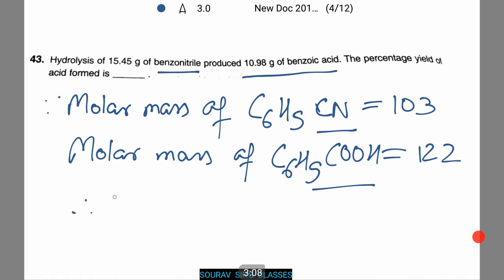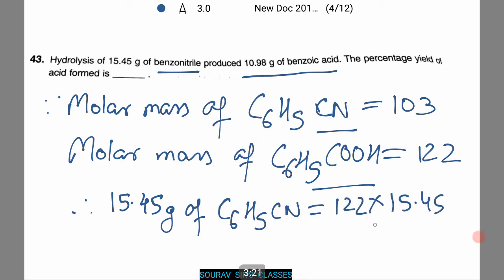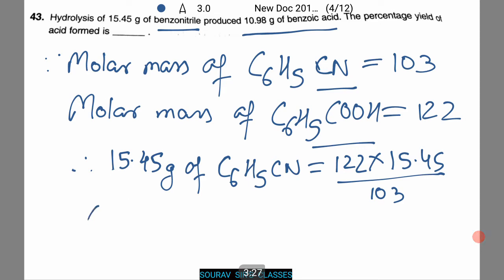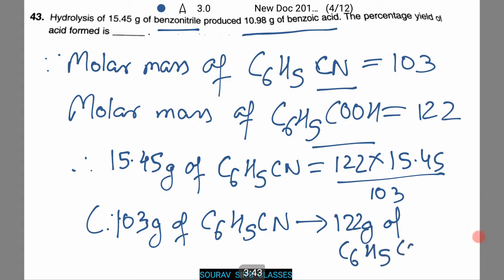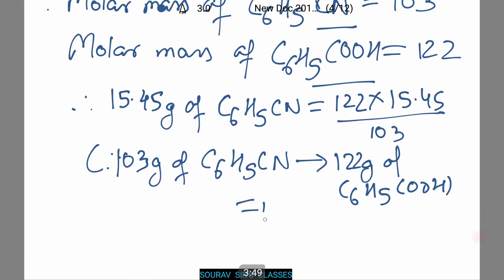Therefore according to the question, 15.45 grams of C6H5CN equals 122 times 15.45 by 103. This is because 103 grams of C6H5CN gives 122 grams of benzoic acid, that is C6H5COOH, which equals 18.3 grams of benzoic acid.